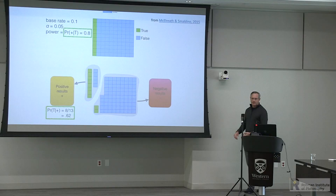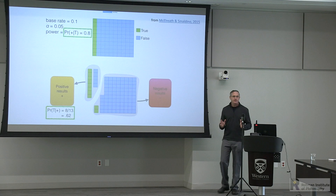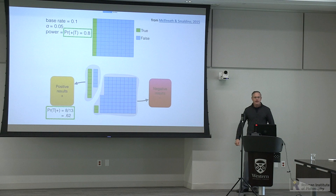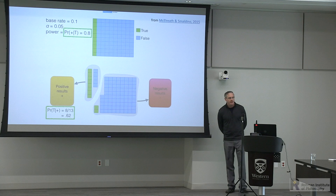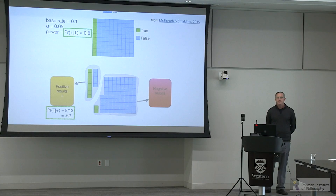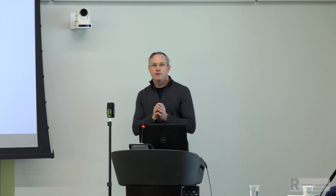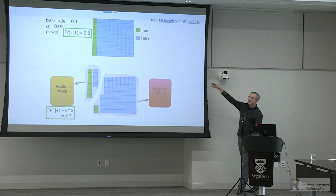In a paper they published, if we just take null hypothesis significance testing — which most of us tend to use, partly because that's all we're taught — you have to make certain assumptions. Let's say alpha is .05 and statistical power is 80%, and assume 10% of hypotheses are true a priori and 90% are not. You'll find 13 positive results: 8 of 10 true ones detected, plus 5 false positives. Your probability of discovering true results overall in this model is 62%.